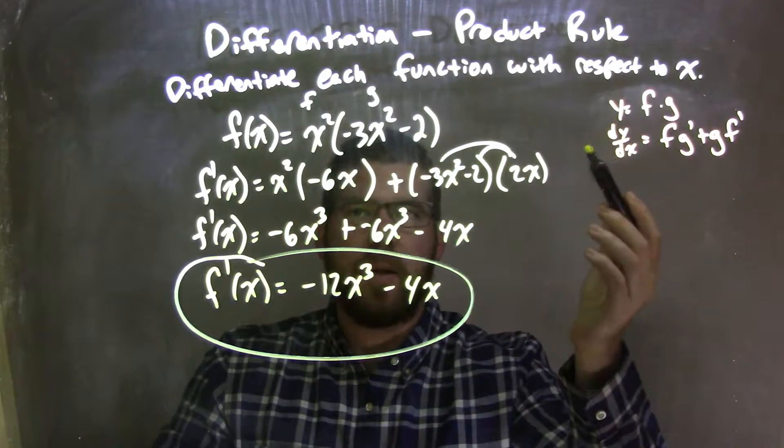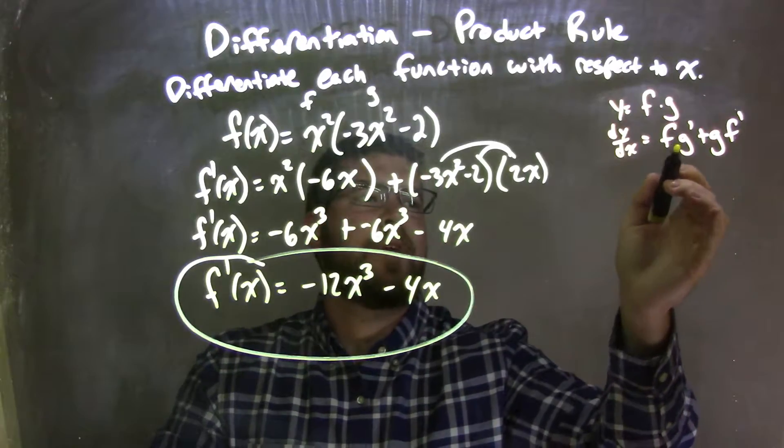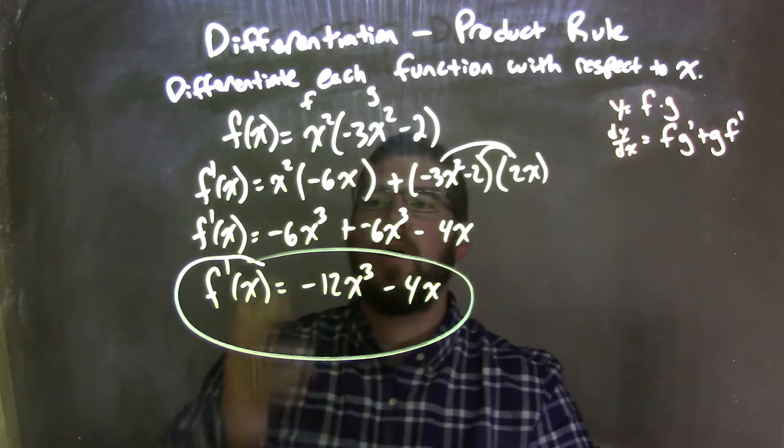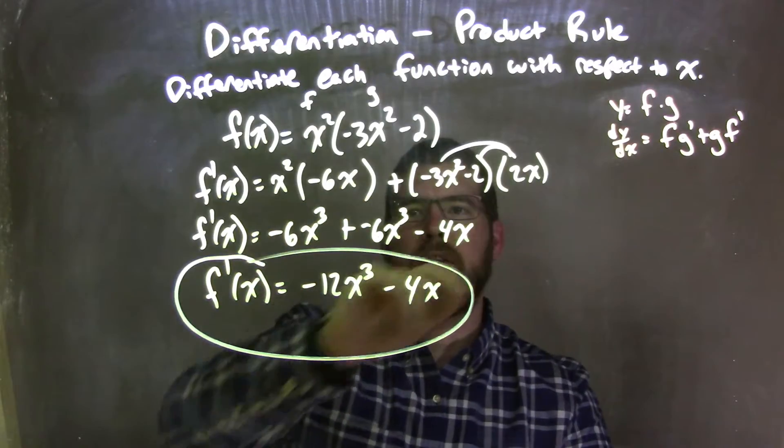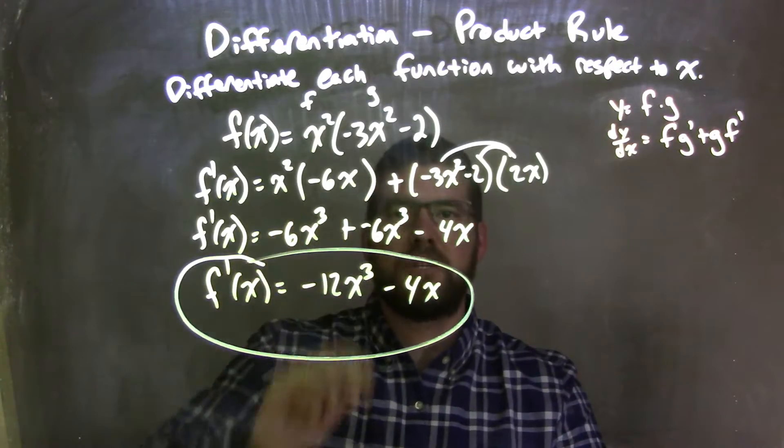Well, then I apply the product rule here, which is f times g prime plus g times f prime. And I also take a derivative of f and g, and put them in their corresponding spots, the same with just keeping f and g in their corresponding spots.